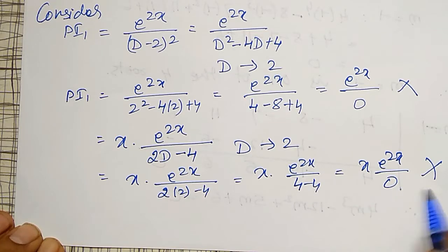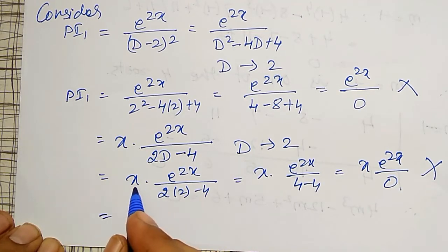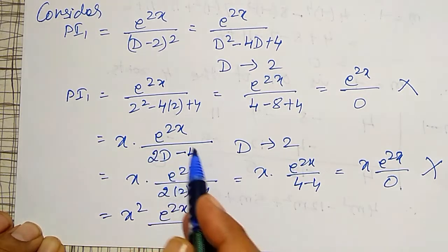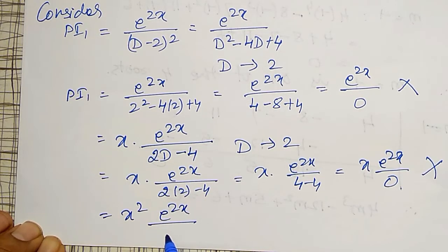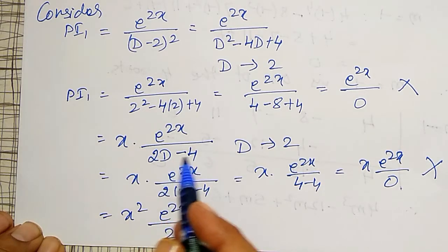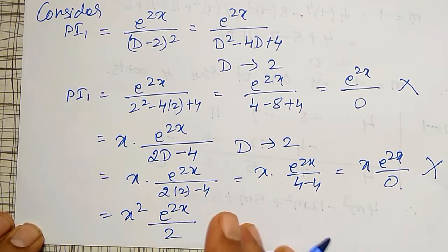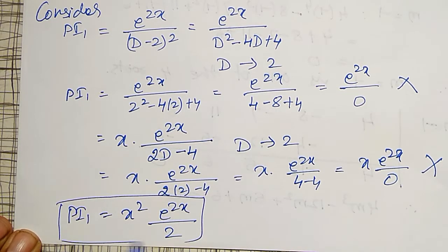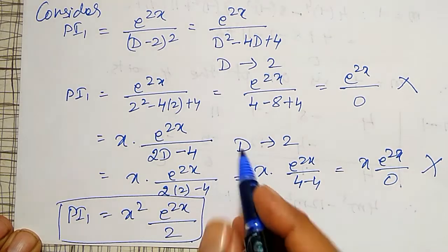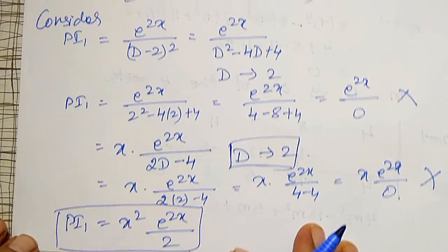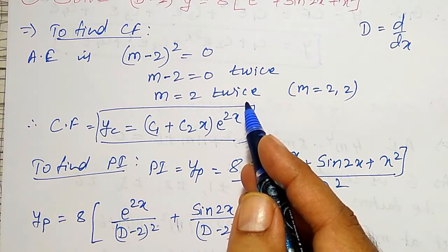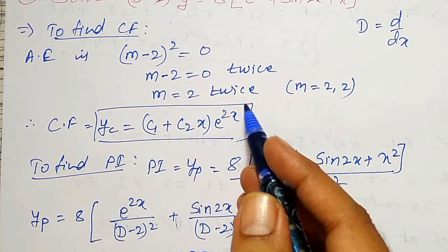Already x is there, so multiplying by x again gives x squared · e to the power 2x divided by differentiation of (2D minus 4), which becomes 2. Denominator is not becoming 0 now. Therefore, PI1 equal to x squared · e to the power 2x divided by 2. This is because 2 is a repeated root in my CF, that is why it becomes 0 twice.